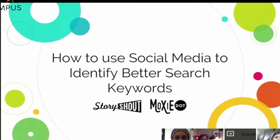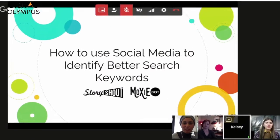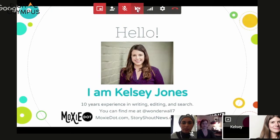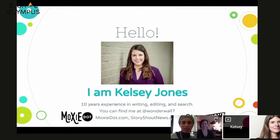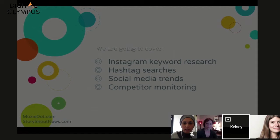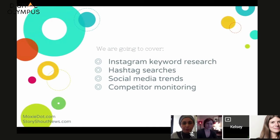I'm so excited to be here — this is my second Digital Olympus, and it's really cool that this one was an all-female version. I'm going to talk about how to use social media to get more keyword ideas for your SEO campaigns. Quick intro: I'm Kelsey, I have 10 years of experience in writing, editing, and search. I'm on most social networks as wonderwall7. I run Story Shout, which provides industry news for your website written by experienced journalists, and that's a sister company of Moxie Dot, where I do SEO audits, social media campaigns, and long-form content.